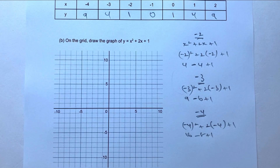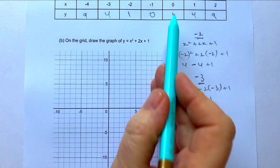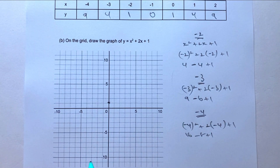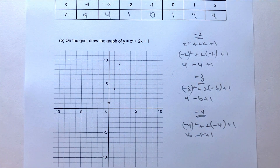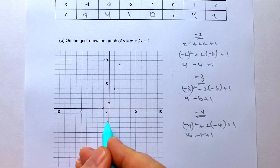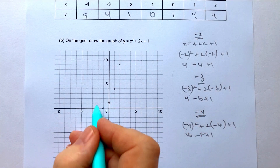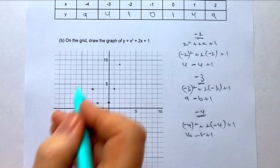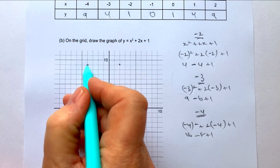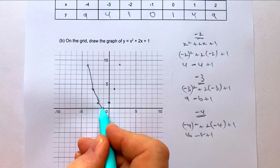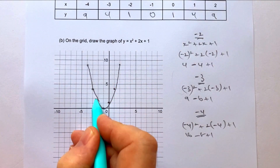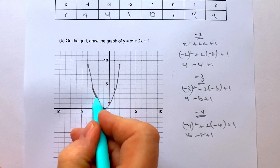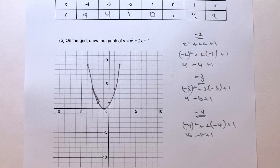Plotting these coordinate pairs gives a nice quadratic curve. Starting with (0,1), (1,4), (2,9), then (−1,0), (−2,1), (−3,4), (−4,9). Joining them produces a smooth parabola — a classic quadratic curve shape.